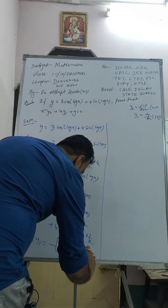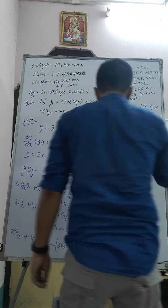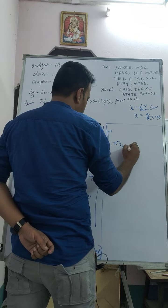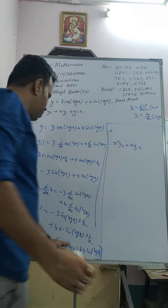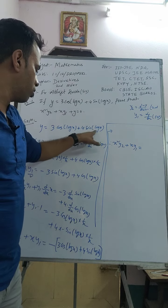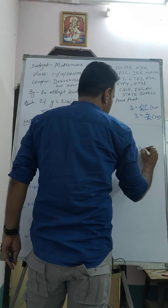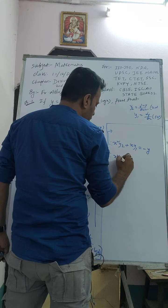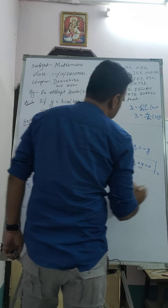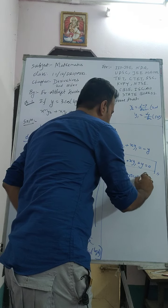Therefore x²y₂ + xy₁ = −3cos(log x) − 4sin(log x), which is −(3cos(log x) + 4sin(log x)). From equation 1, that quantity equals y. So x²y₂ + xy₁ = −y, which gives x²y₂ + xy₁ + y = 0. Hence it is proved.